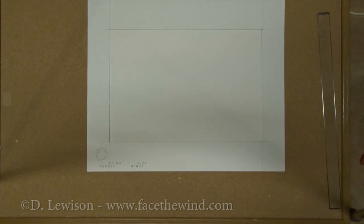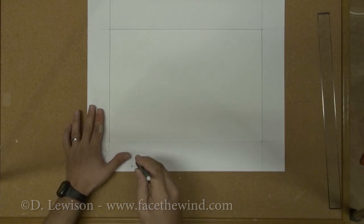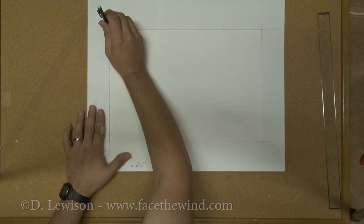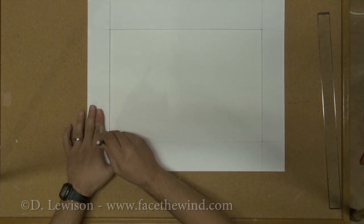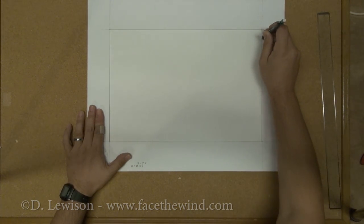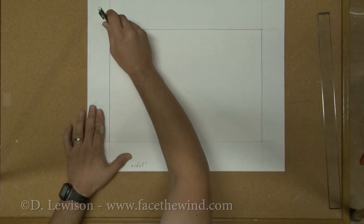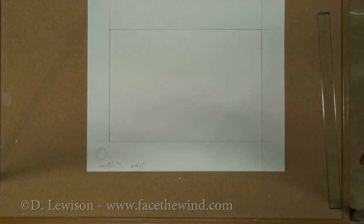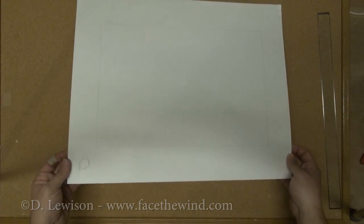I'm going to take a pencil with the lead extended pretty far and I'm going to very carefully trace the mat itself. When you're doing this be very careful to hold the pencil as vertical as possible. Alright, so now I have basically a copy of the inner mat on this middle mat.